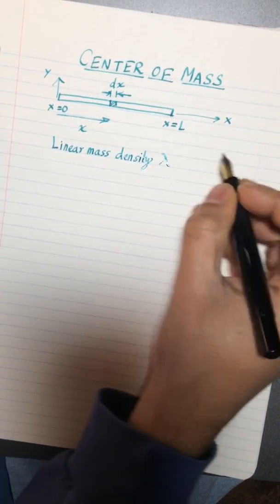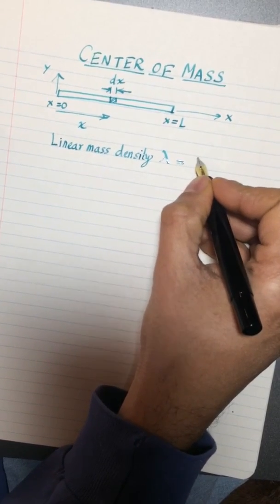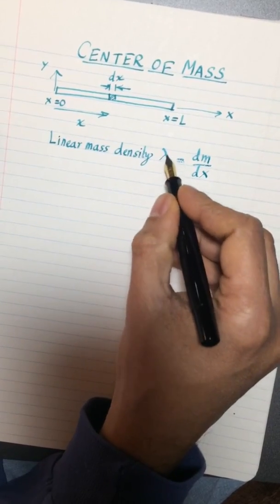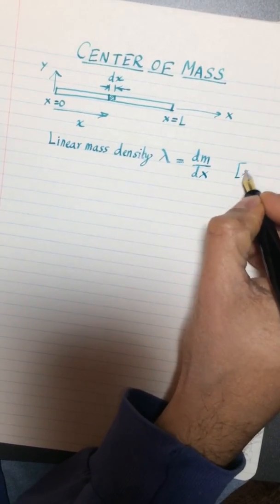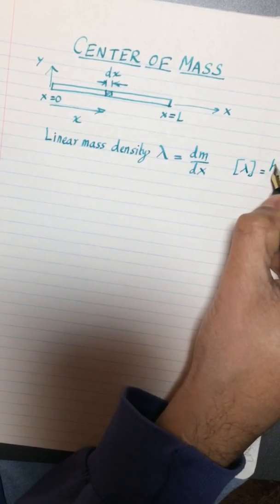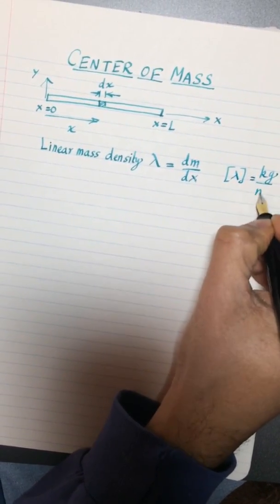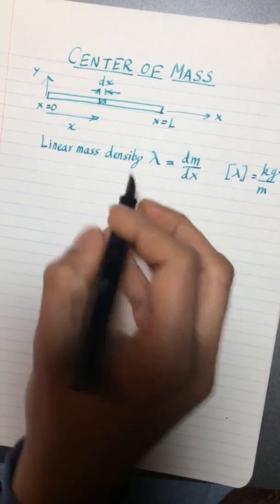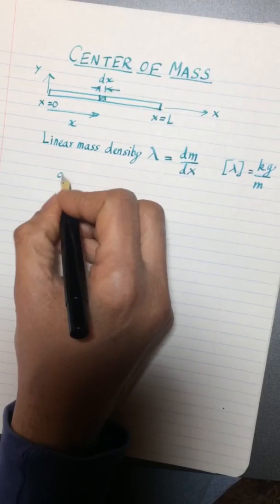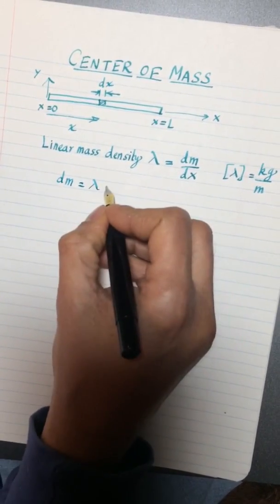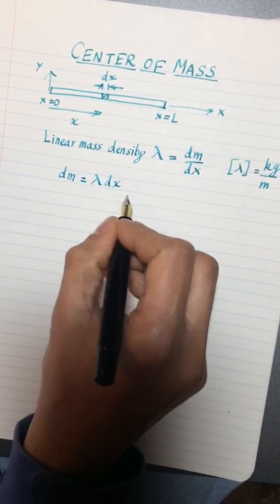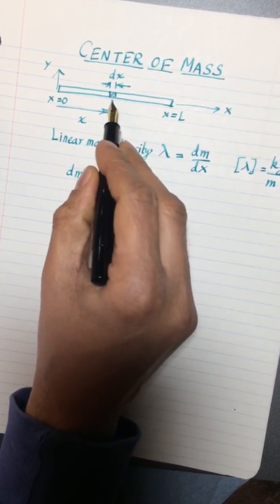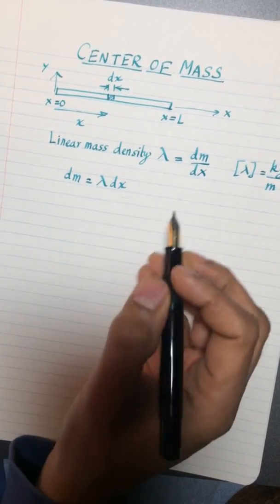I'll call it lambda and it is defined as dm over dx, so you can see that lambda must have units of mass which is kg and length which are meters, so it's going to be kg per meter. If I solve for dm I'm going to get dm equals lambda dx. So this tells us how the length of this little element relates to the mass of that same element.